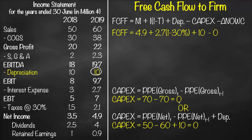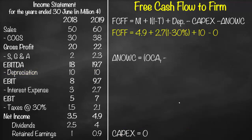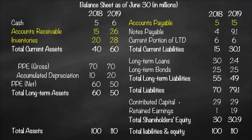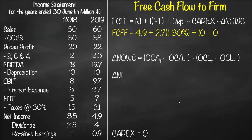So we put minus 0 for CapEx. Next we need to calculate the change in net operating working capital. We look at the balance sheet and choose only operating items — operating current assets minus operating current liabilities — taking the difference between two years. Operating items are those used directly in operations, meaning no interest or return is received or paid for these items.